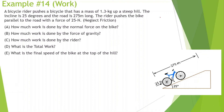Alright guys, welcome back to work part 2. A bicycle rider pushes a bicycle that has a mass of 1.3 kg up a steep hill. The incline is 25 degrees and the road is 275 meters long. The rider pushes the bike parallel to the road with a force of 25 N. How much work is done by the normal force on the bike? How much work is done by gravity? What is the total work? What is the final speed of the bike at the top?